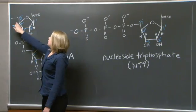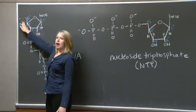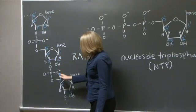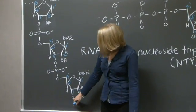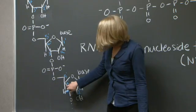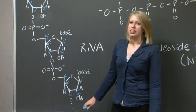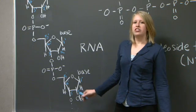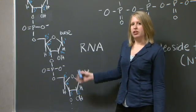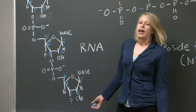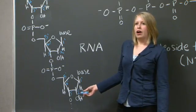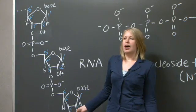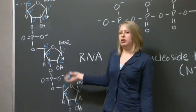On this end, the extending atom is the five prime carbon, and on the other end, the extending atom is the three prime carbon attached to this oxygen. This three prime carbon is where you would attach another NTP if you wished to extend this chain. So we label the ends of RNA five prime to three prime, and RNA is always polymerized in the five prime to three prime direction.